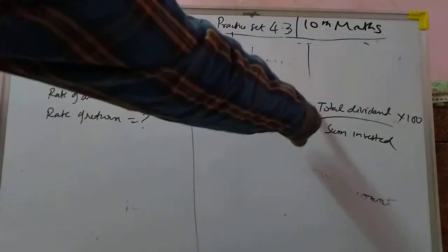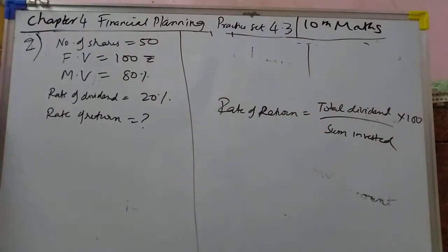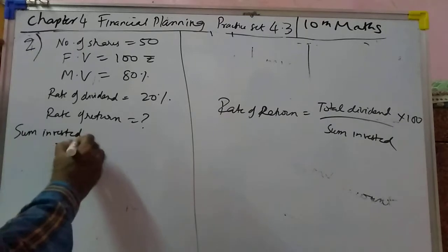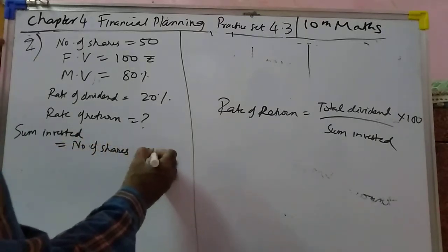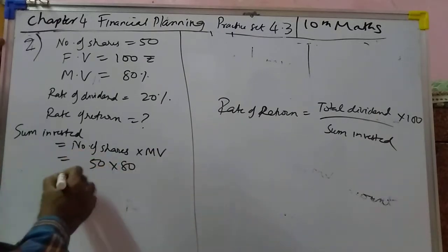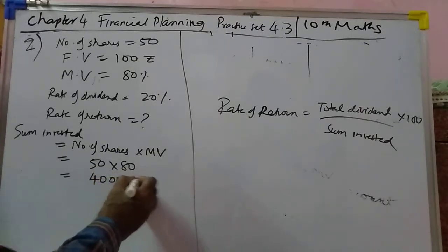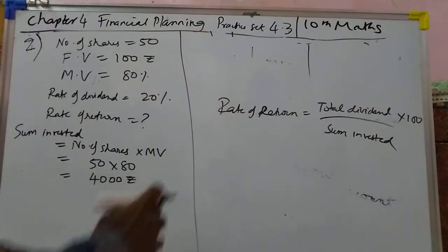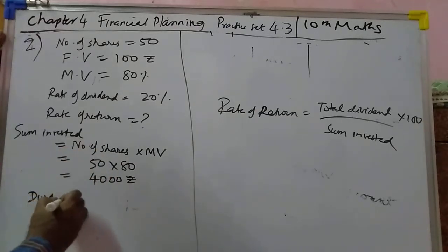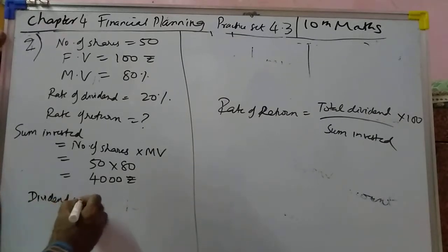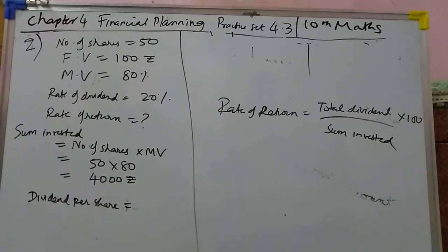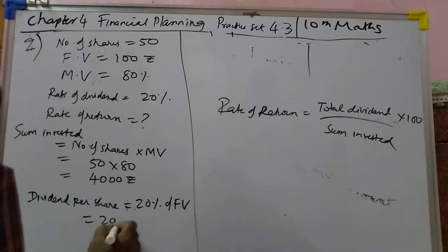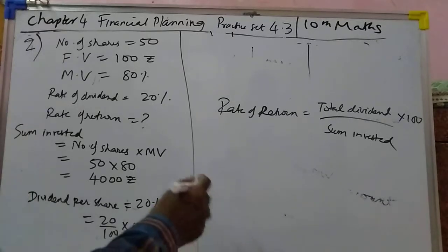Next, second problem. The formula for rate of return is: total dividend upon sum invested into 100. First, find sum invested. The formula is number of shares into MV, that is 50 into 80, so you get 4000 rupees. Now find total dividend. Dividend per share equals 20% of face value, that is 20 upon 100 into 100, so you get 20 rupees.